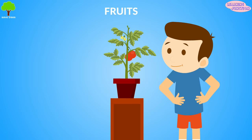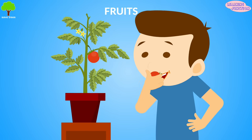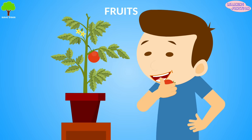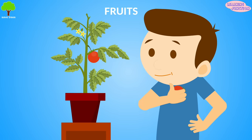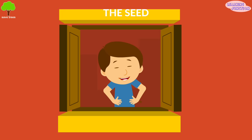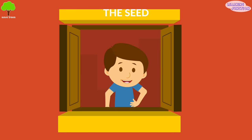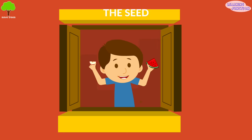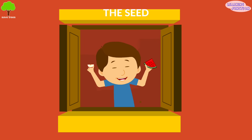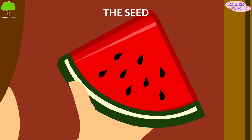The fruits. By the process of pollination, many flowers grow into yummy fruits which we eat. The seed. The fruits contain seeds. Some fruits have one seed. Some have two. And some fruits can have many seeds that grow into new plants.